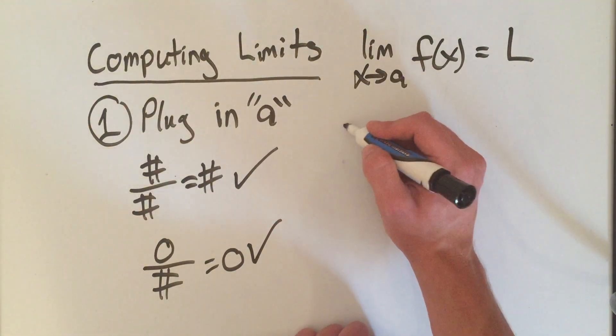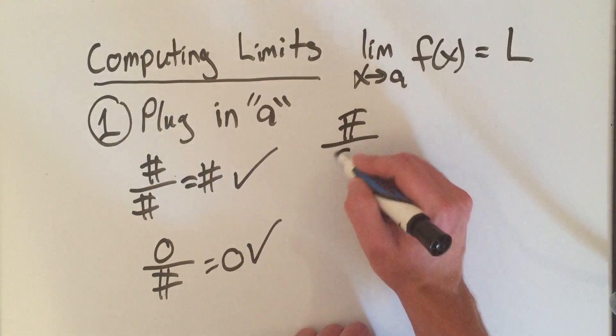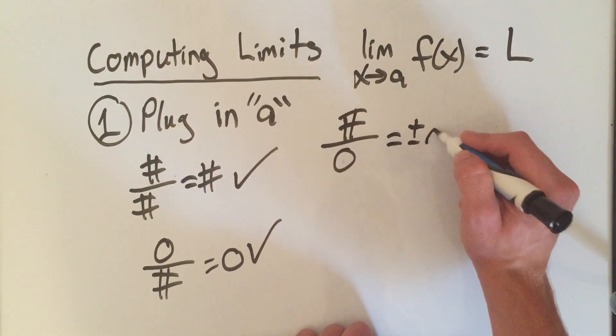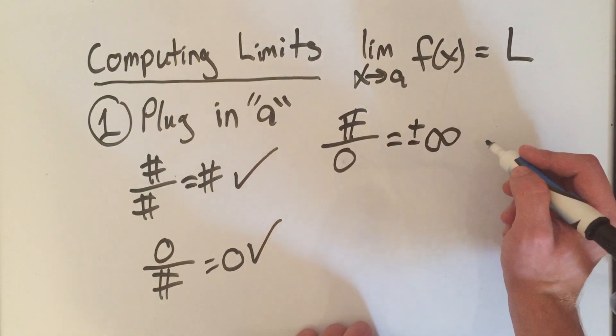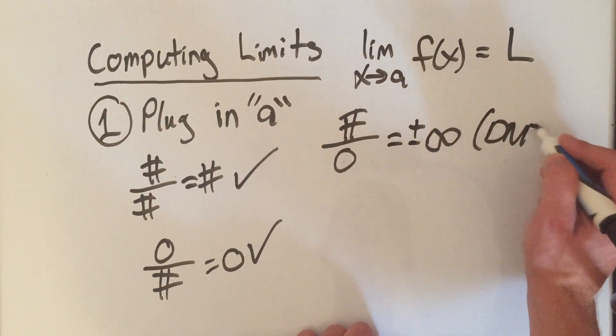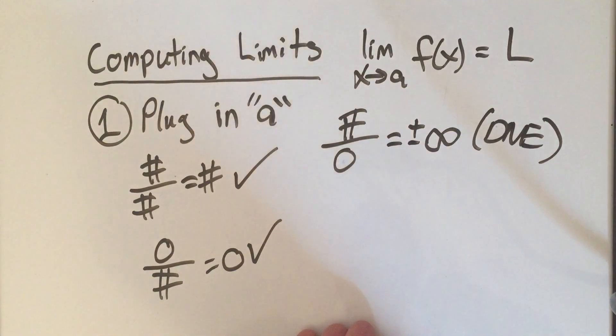You could get a number over zero, which is some type of infinity. Or you might say that that does not exist, depending on how your teacher likes it.